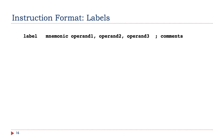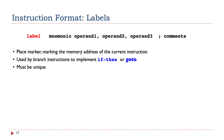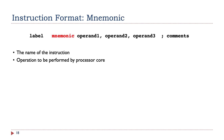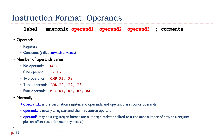ARM instructions use the following general format. Labels are place markers marking the memory address of the instruction next to them. Labels must be unique because they are used by branch instructions to instruct the processor on which instruction to execute next. The mnemonic is the name of the instruction or the operation to be performed by the processor. The operands are the values that are manipulated during the operation. Operands can be a value in a register or a constant. Some instructions need only two operands, some only one, and some don't need any operand at all. There are special instructions that need four operands.